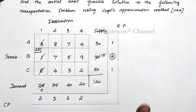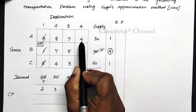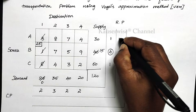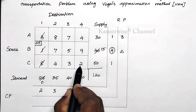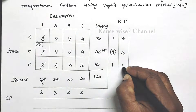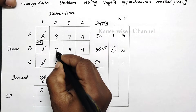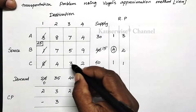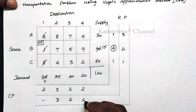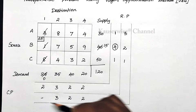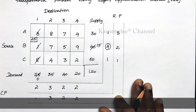We repeat: find row penalty and column penalty. Row 1: least 4, next least 7, difference 3. Row 2: 5 and 7, difference 2. Row 3: 2 and 3, difference 1. Column 1: cancelled (dash). Column 2: least 4, next 7, difference 3. Column 3: 3 and 5, difference 2. Column 4: 2 and 4, difference 2. The highest penalty is 3, but this value appears in two places — this is called a tie.